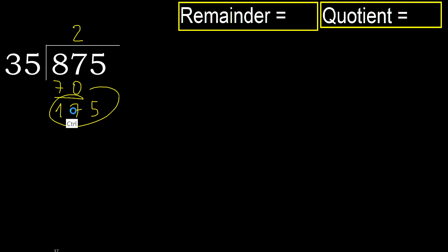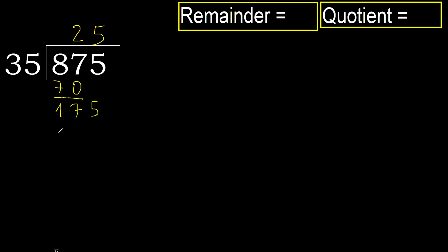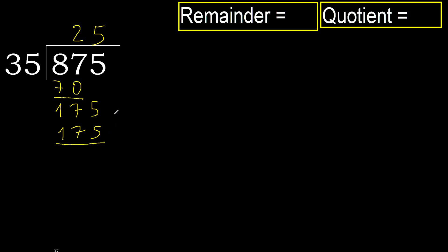175. 35 multiplied by 5 is 175. It is not greater.